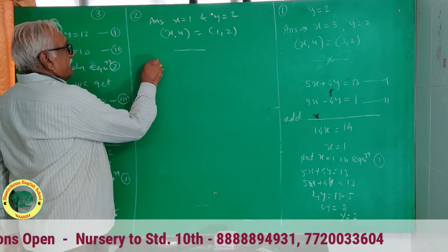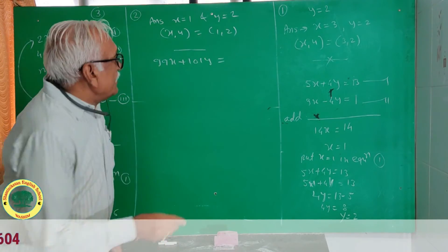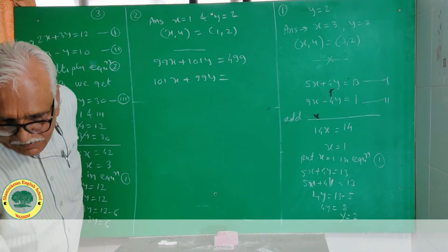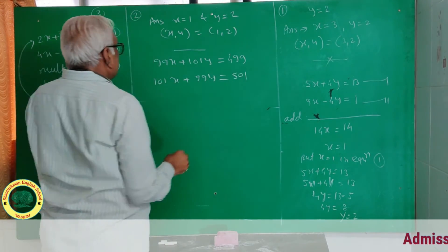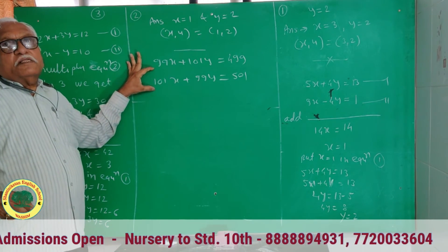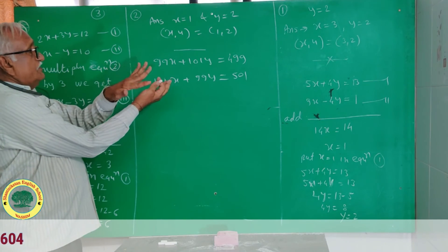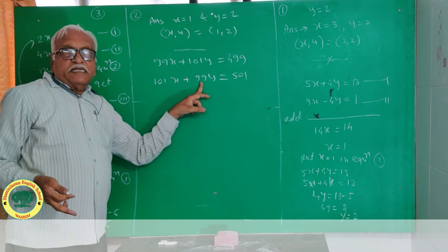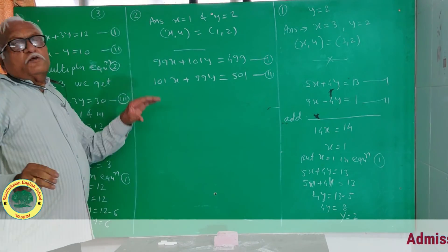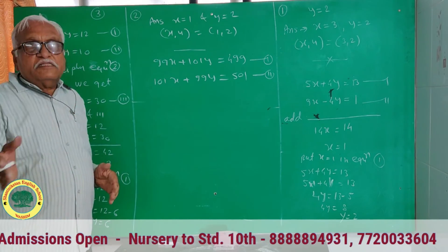Consider the next example: 99x plus 101y equal to 499 and 101x plus 99y equal to 501. This is difficult to solve by the standard equating coefficient method because the multiplication would be very large. However, this is a special type of example — the coefficients of x and y are interchanged: 99 and 101 in equation 1, and 101 and 99 in equation 2. The special method is to first add equations 1 and 2, then subtract equation 2 from equation 1.